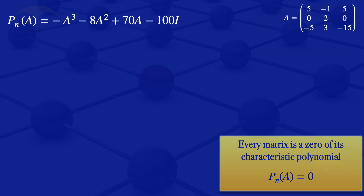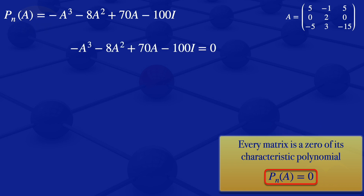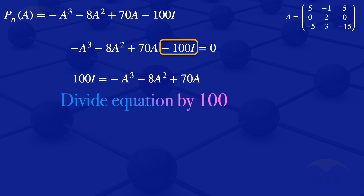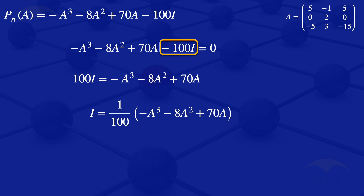By the Cayley-Hamilton theorem, P_n of A equals the zero matrix. Taking minus 100I to the other side gives 100I equals minus A cubed minus 8A squared plus 70A. Dividing by 100, the identity matrix equals 1 over 100 multiplied by minus A cubed minus 8A squared plus 70A.